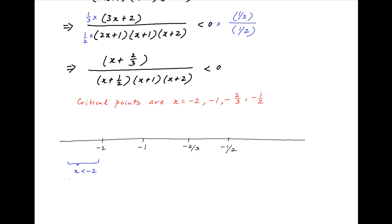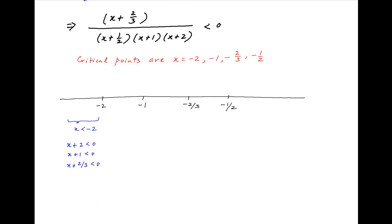When x is less than minus 2: (x plus 2) is less than 0, (x plus 1) is less than 0, (x plus 2/3) is less than 0, and (x plus 1/2) is also less than 0. Therefore, if we denote the left-hand side by f(x), then f(x) is greater than 0 when x is less than minus 2.